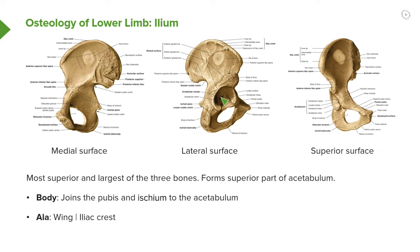If we look on the lateral surface, this is all ileum here, and we can see it going to form the superior part of the acetabulum. A line going approximately in this direction would be the separation of the ileum with the ischium and the pubis. The body of the ileum, visible on the lateral surface, joins to the pubis and the ischium at the acetabulum.